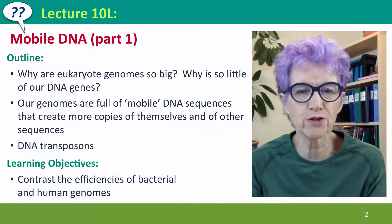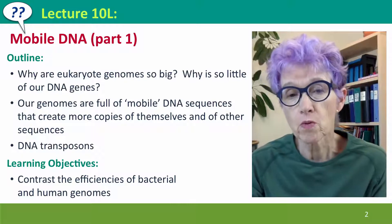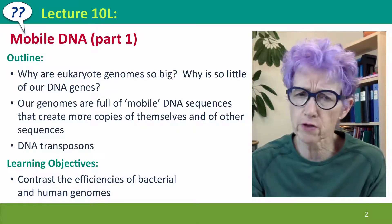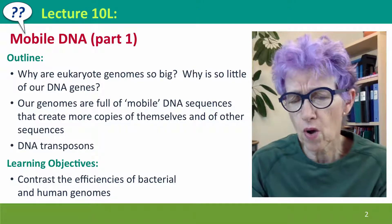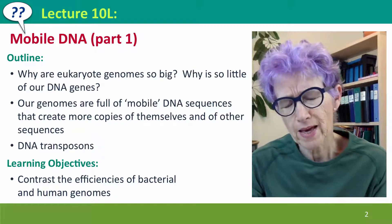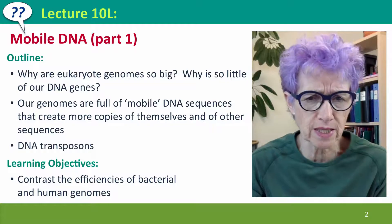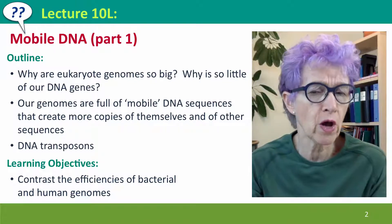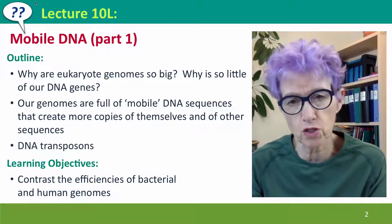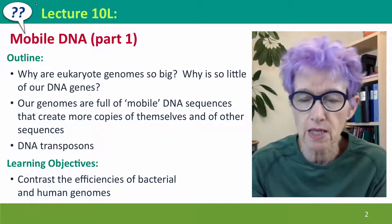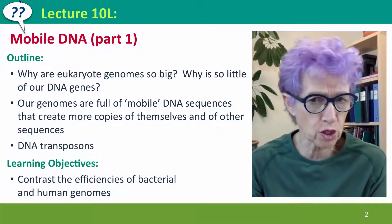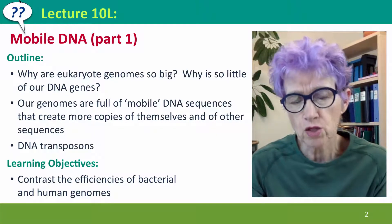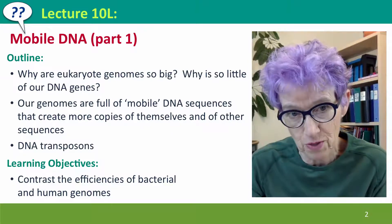Hi everyone. Welcome back to lecture 10L of Useful Genetics, where we're going to be talking about mobile DNA. We'll talk about it in the context of the question: why are our genomes so big and why is so little of it our genes? The answer is that our genomes are full of mobile DNA sequences or mobile genetic elements that are able to create not just more copies of themselves, but of other sequences as well, so that all these sequences accumulate in our genomes.